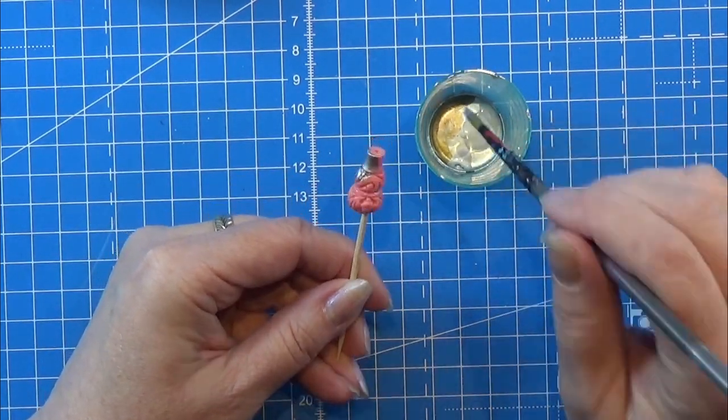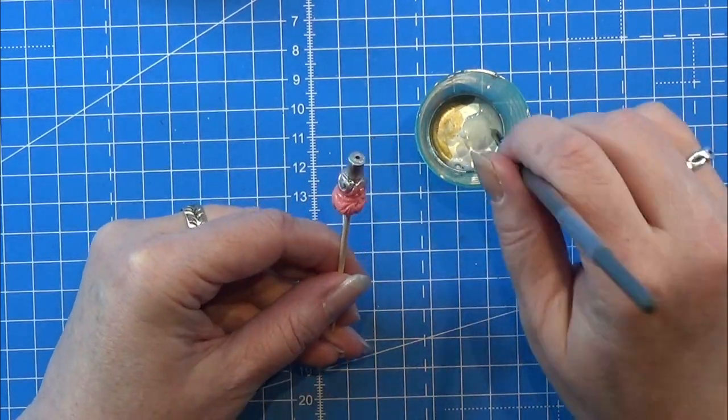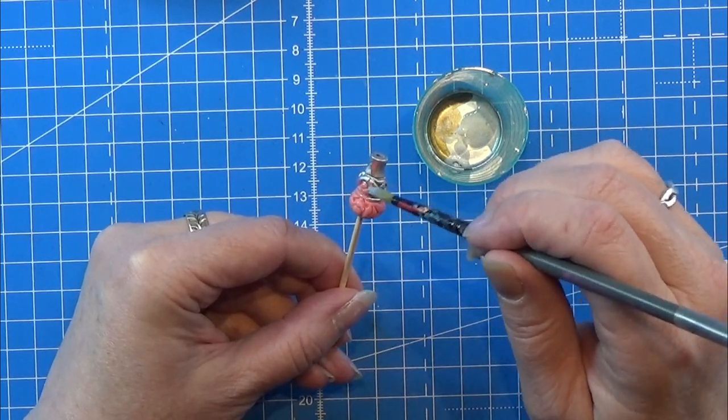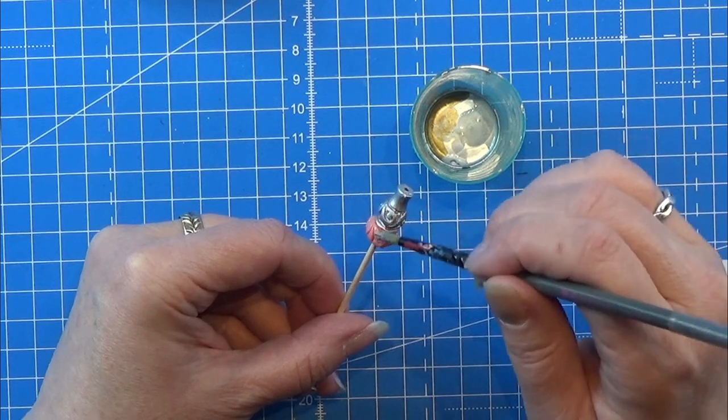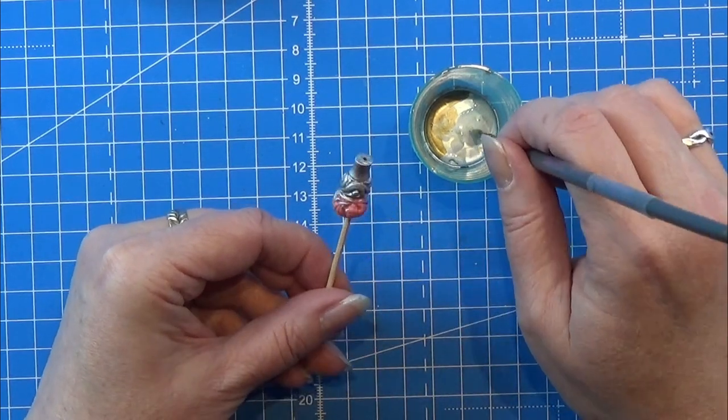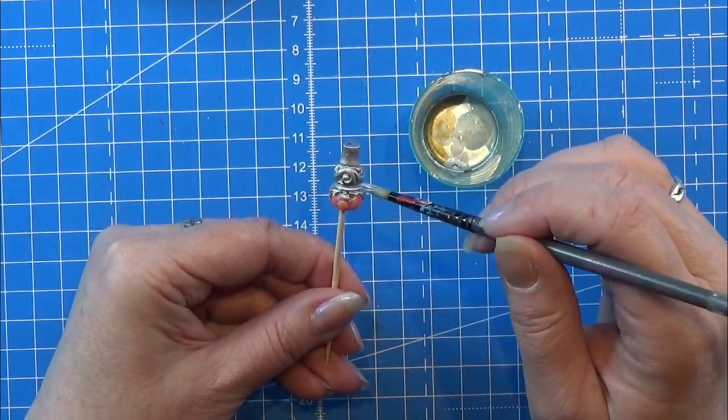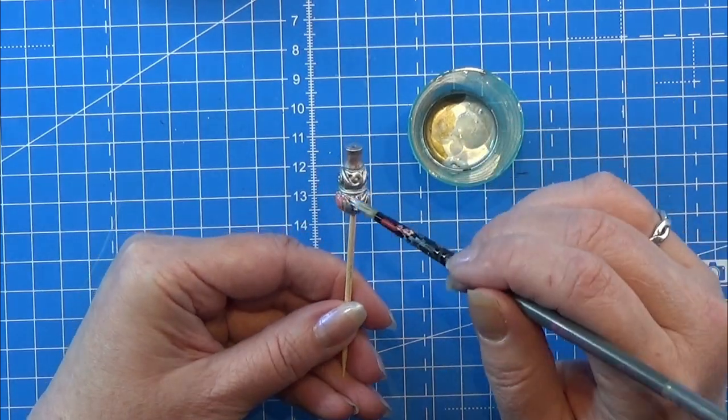So I went on Aliexpress and I found a few beads here and there and I found this one. I thought it was great for the body of the water pipe, so I just first of all painted this one in a silver metal paint.